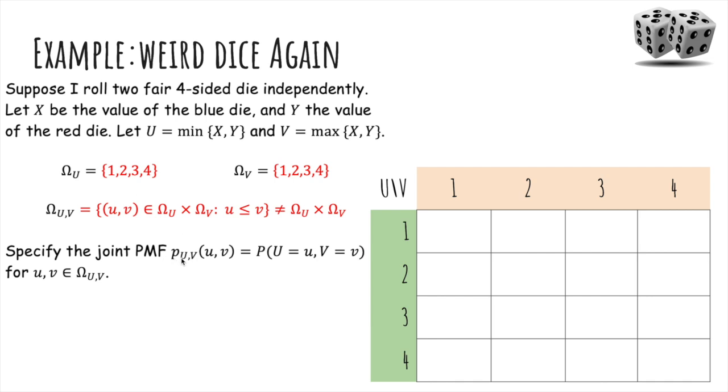So let's specify the joint probability mass function, the probability that U equals u and V equals v. First, everything on this lower diagonal is zero because U has to be less than or equal to V. Then along the diagonals, we need the min and max to be one. And the only way to have that happen is if X and Y are both equal to that value. So there's only one outcome out of the 16.